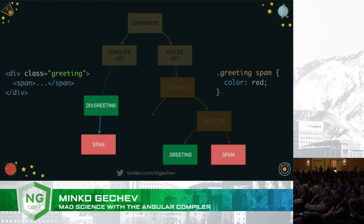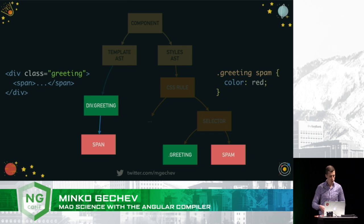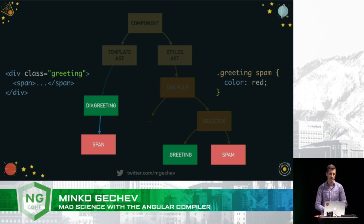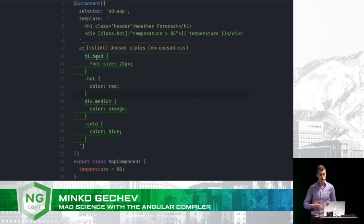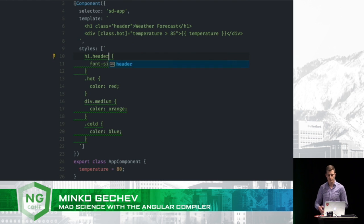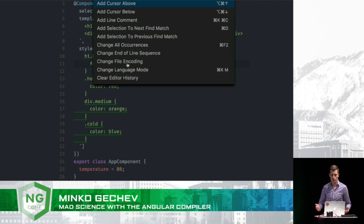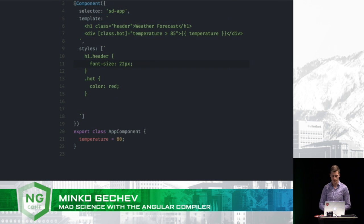So we're going to build the AST for the templates. Also, we're going to build the AST for the styles. We're going to match both ASTs against each other and find out that this style is actually not in use. Here is how this looks in practice — this is Colalyzer. It reports unused styles by using TSLint. We can either decide to fix typos or just drop unused styles by using the auto-fixes of TSLint. And that's it. This way, we can reduce the size of our application.